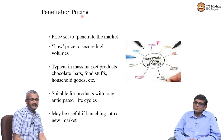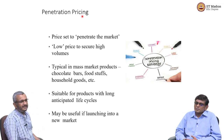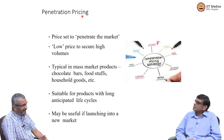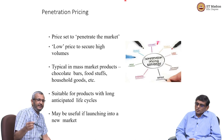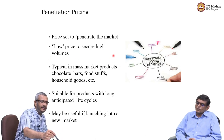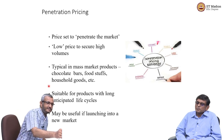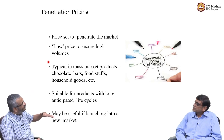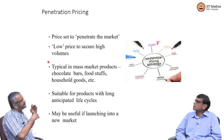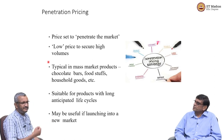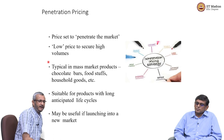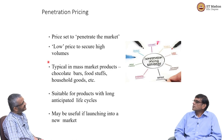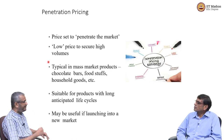Penetration pricing — illustrated by Jio's example — involves setting very, very low initial prices to secure high volumes. In mass markets, you keep prices very low and attract large customer bases. Typical Walmart-type strategies fall under penetration pricing. It is very useful when launching a product, because consumers immediately compare prices to existing alternatives.